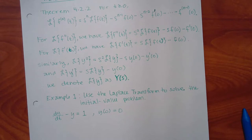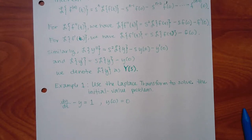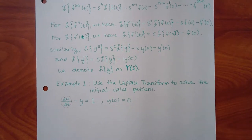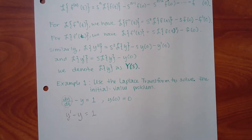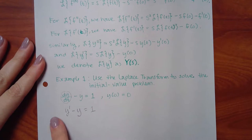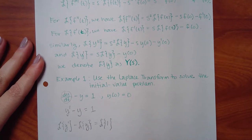This is our first example: use a Laplace transform to solve the initial value problem. You can only solve initial value problems using Laplace. This notation is just Y prime, so I can write it as Y prime minus Y equals 1. Since Laplace is an algebraic operator, I have to Laplace the whole equation — I can Laplace each individual term and take out any coefficients.